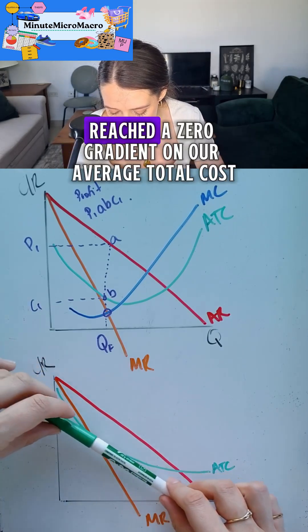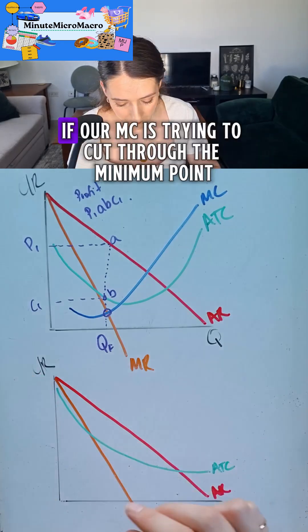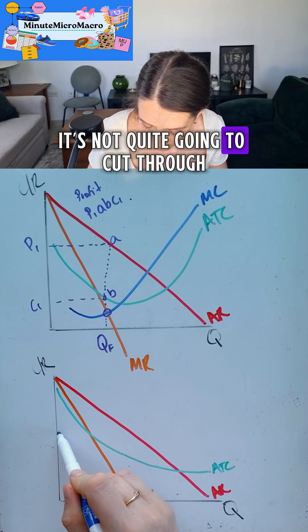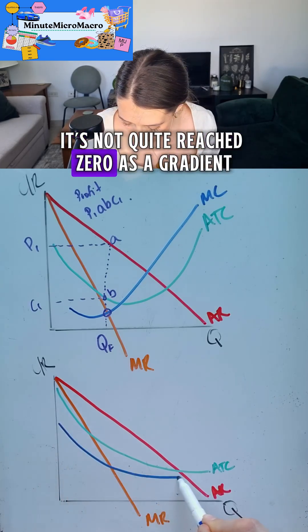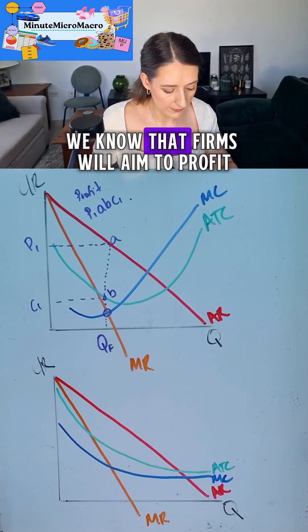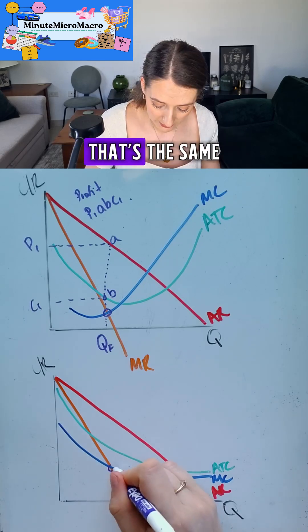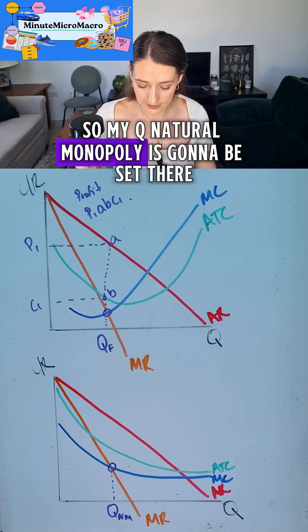Now you might see that we haven't actually reached a zero gradient on our average total cost. And so if our MC is trying to cut through the minimum point, it's not quite going to cut through my average total cost. It's not quite reached zero as a gradient. That's my marginal cost. We know that firms will aim to profit maximize at where MC equals MR. That's the same.